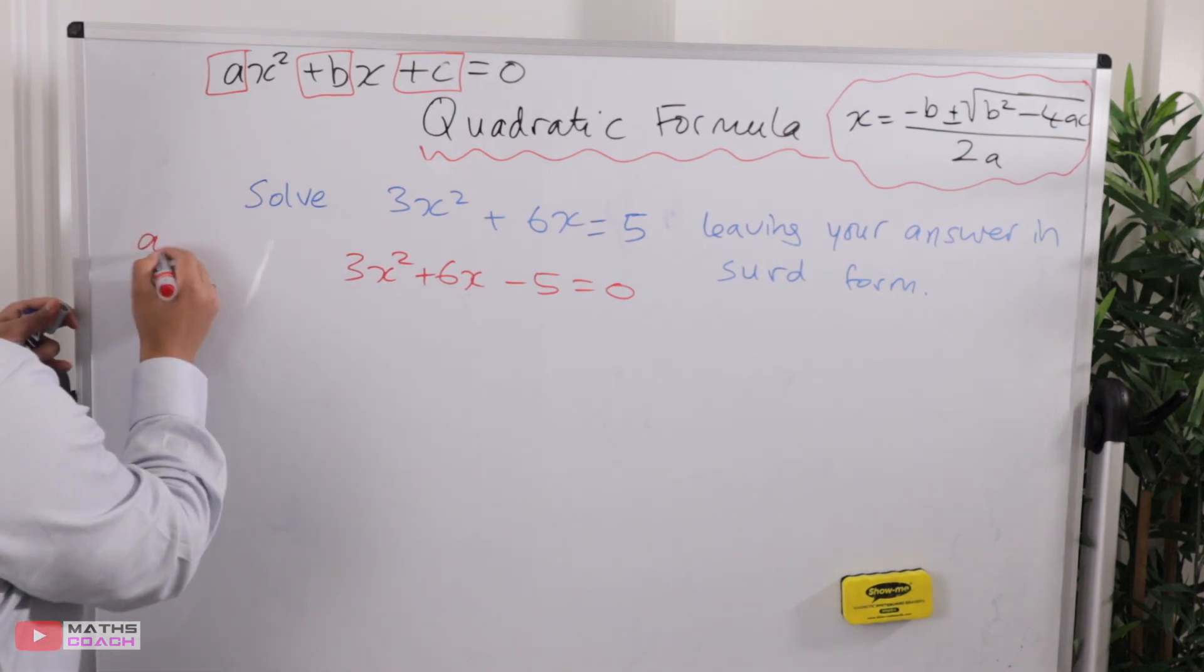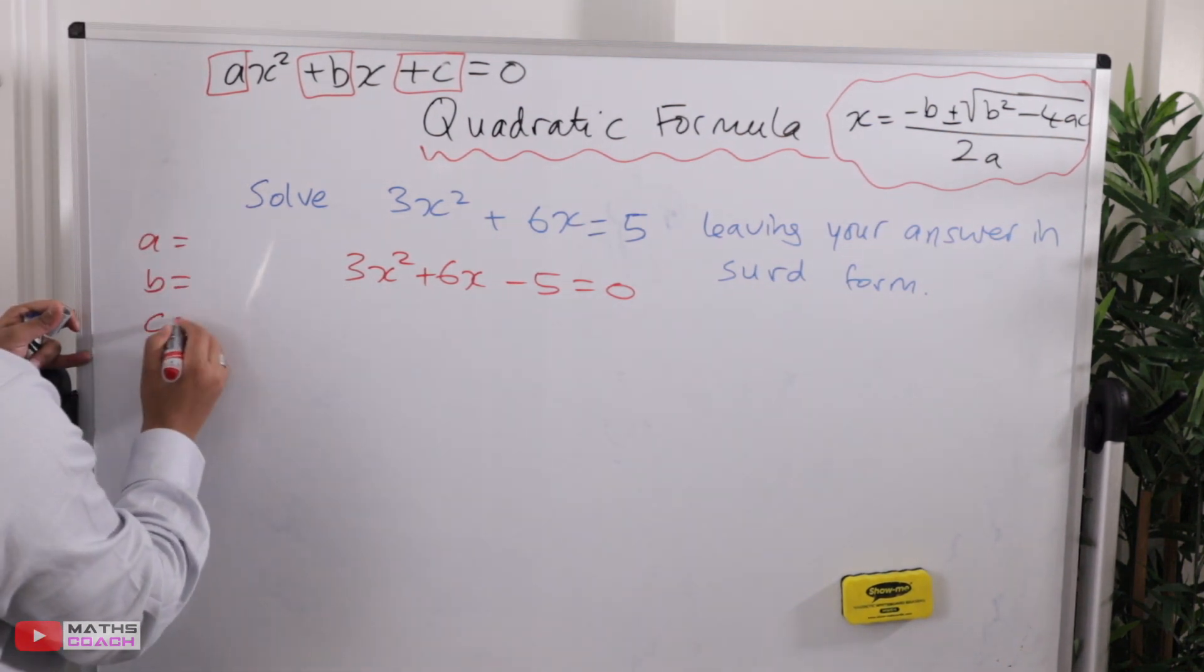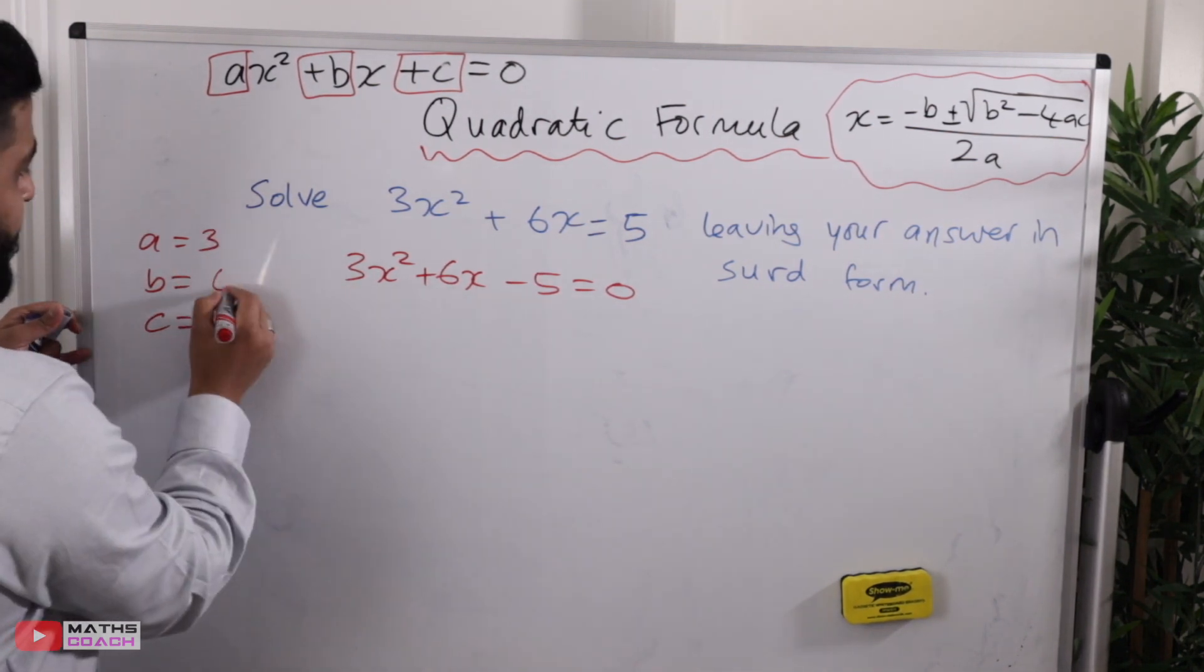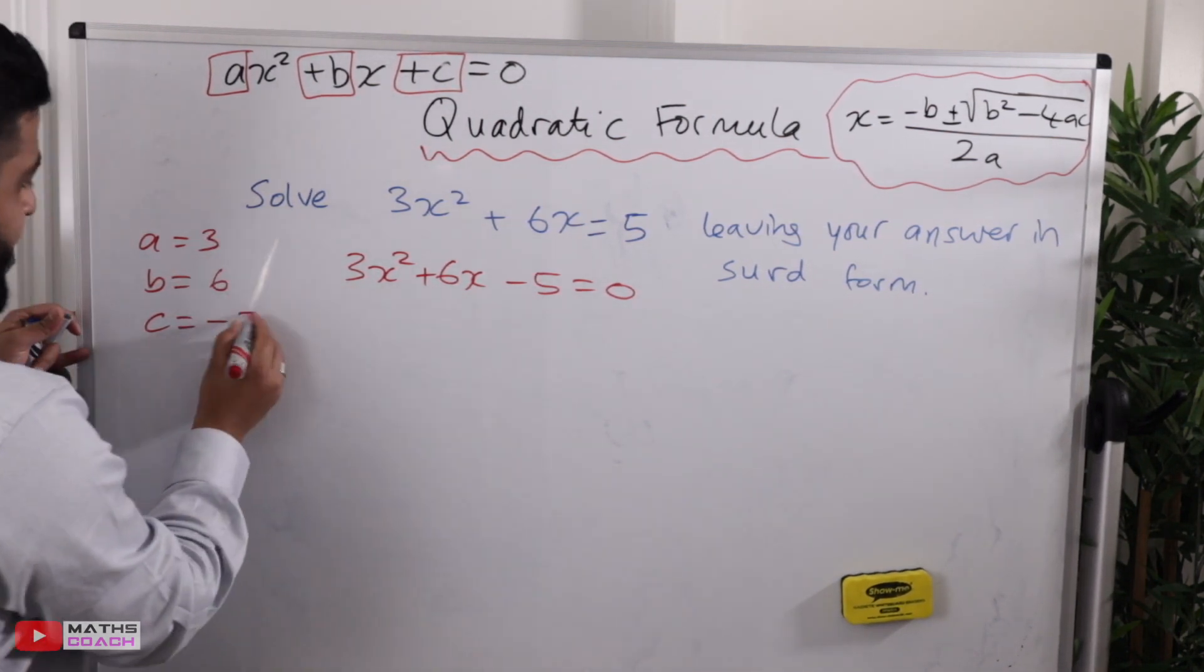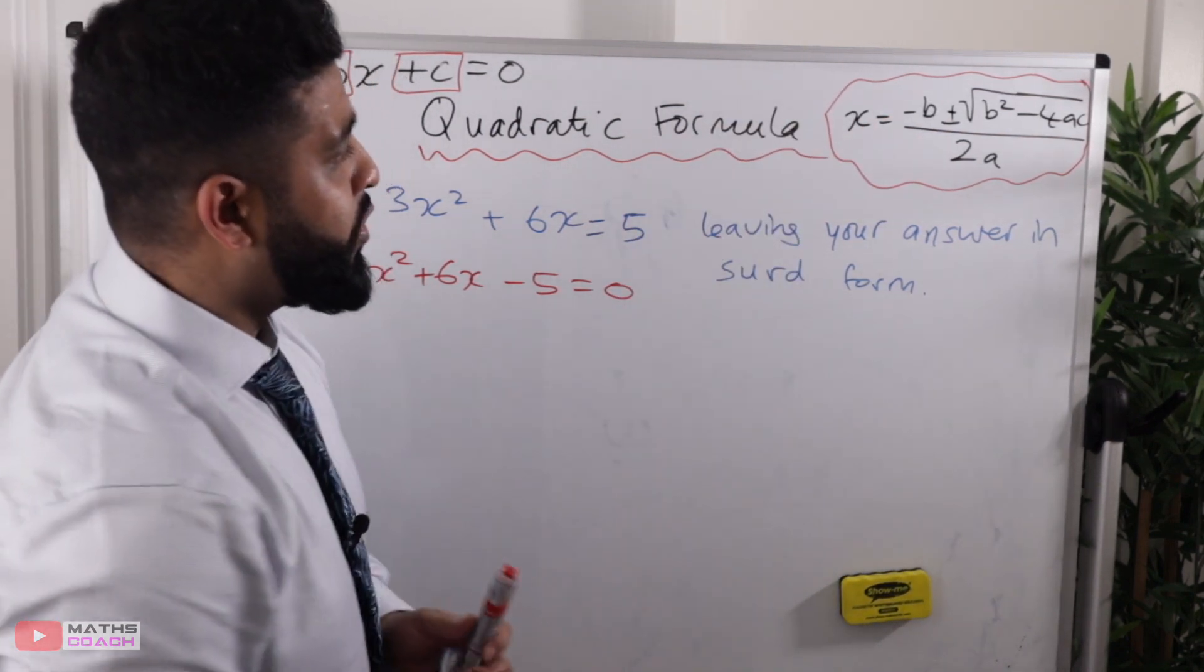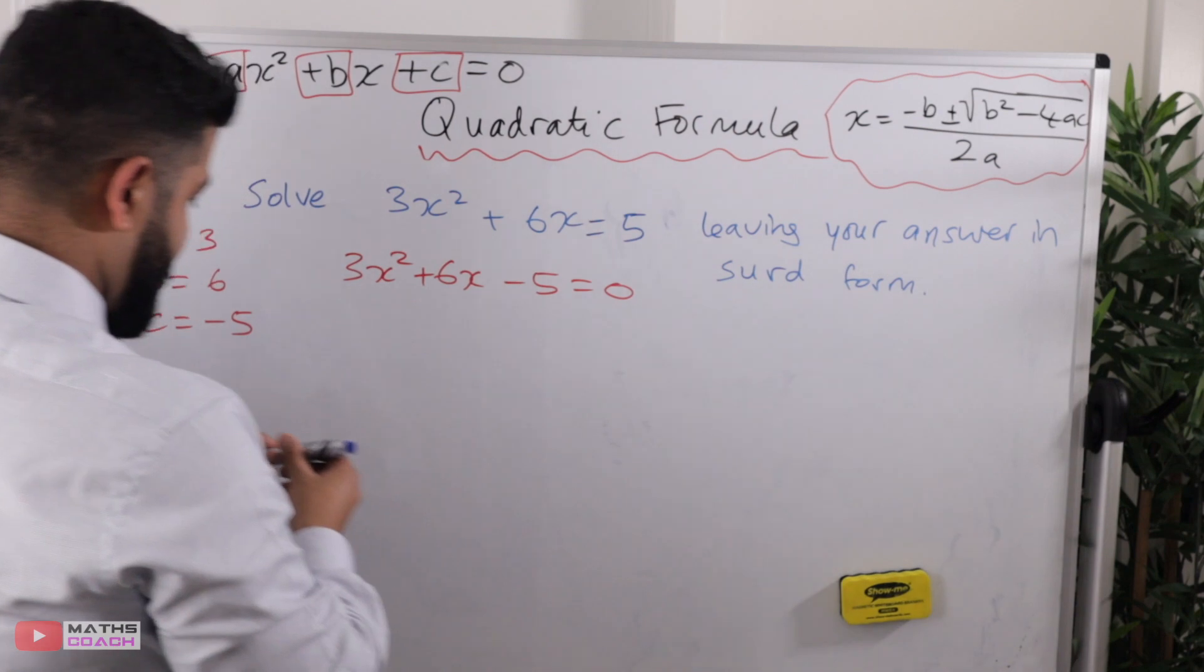Next step would be to identify your A, your B, and your C. So our A is 3, our B is positive 6, and our C is minus 5. After that, substitute our values into the quadratic formula.